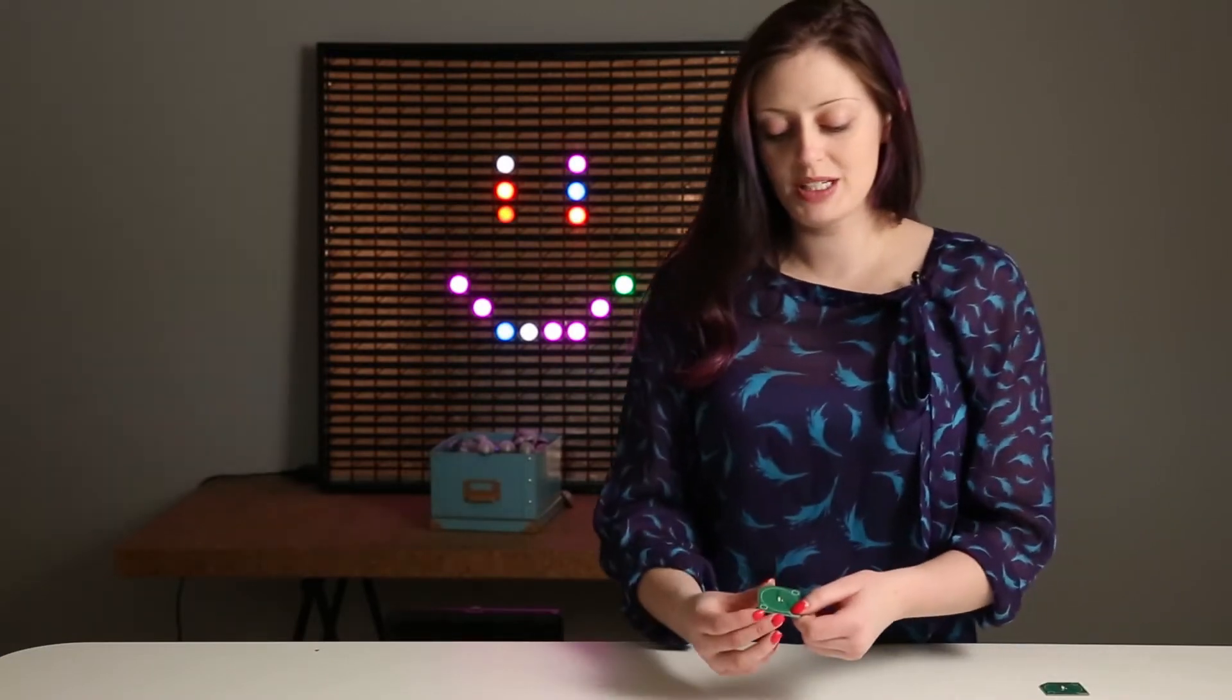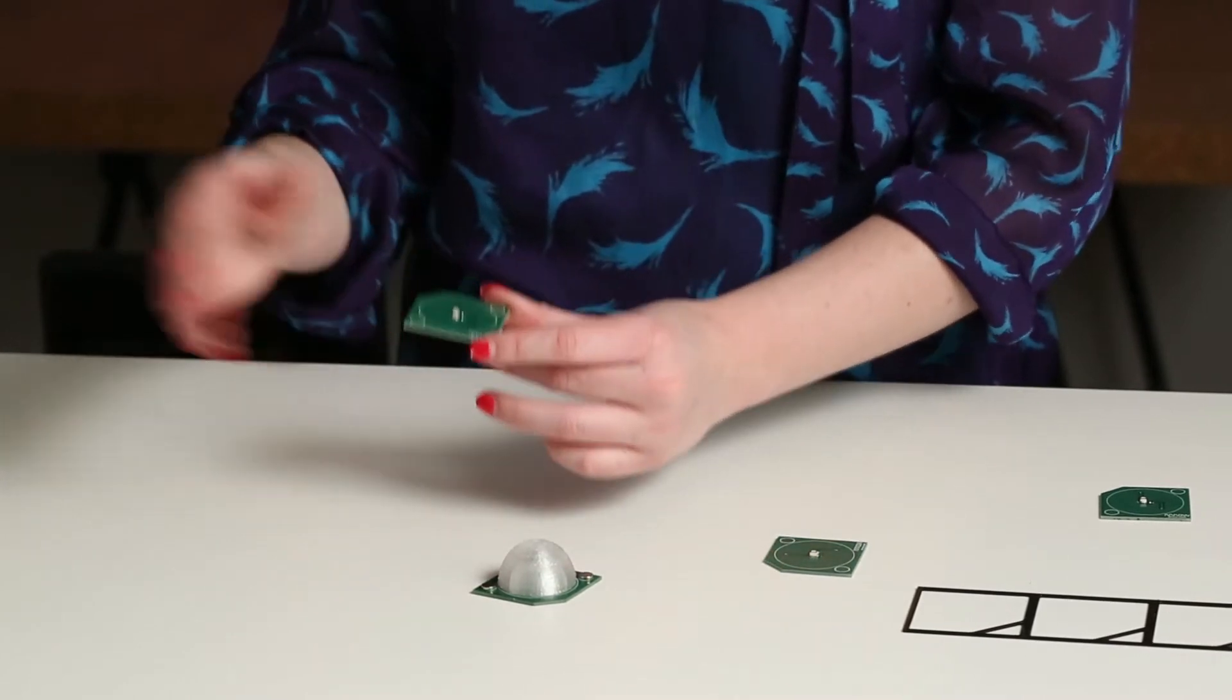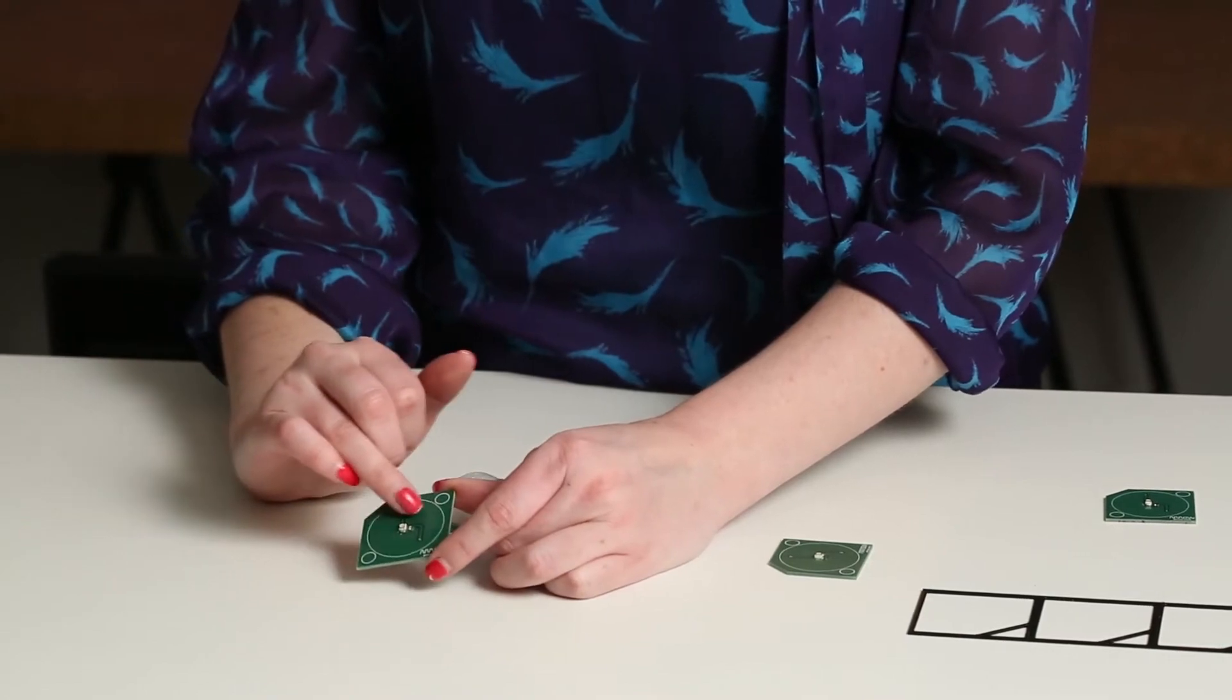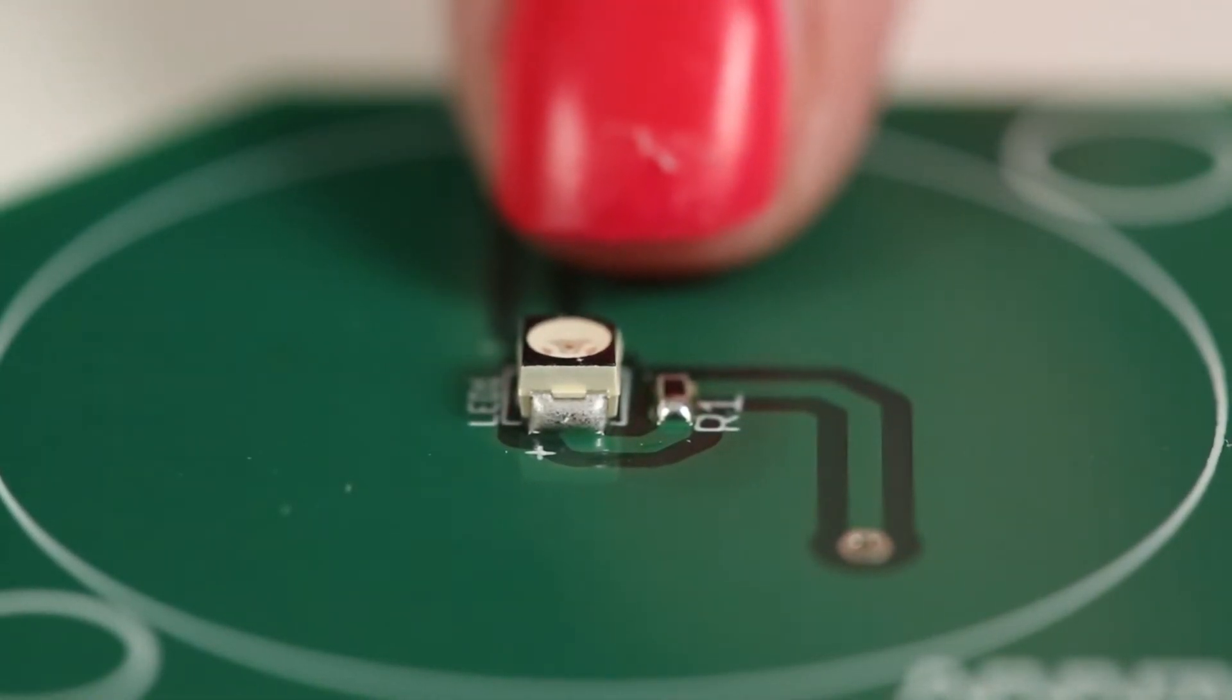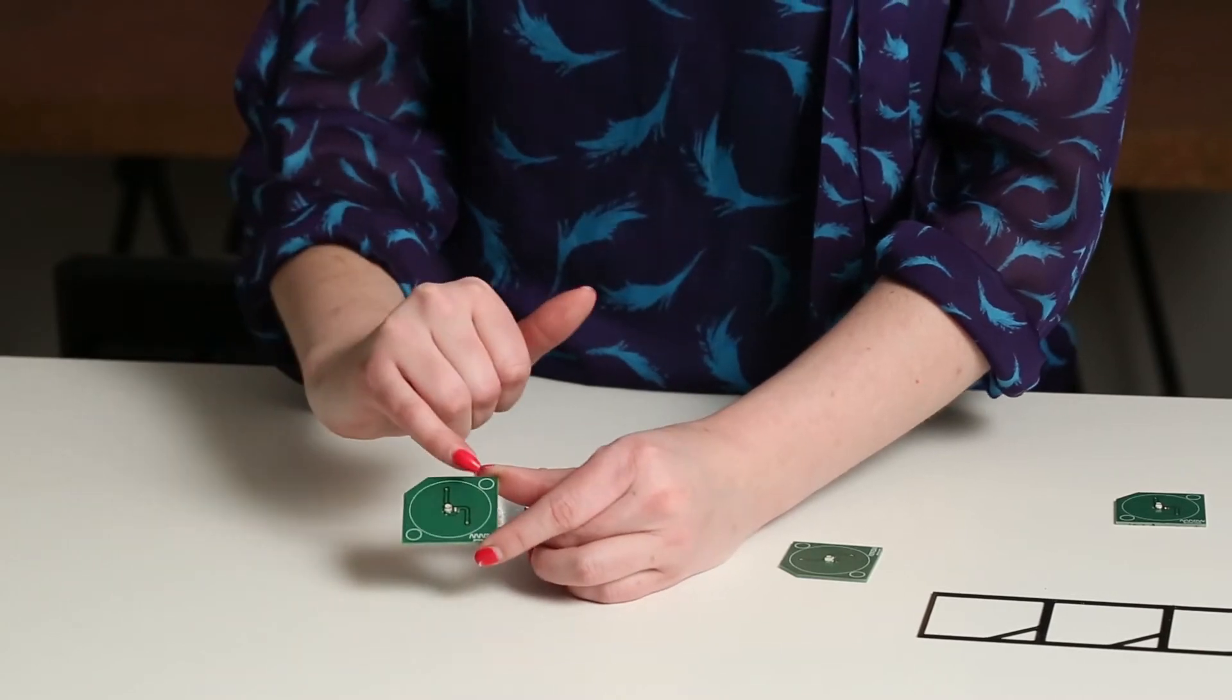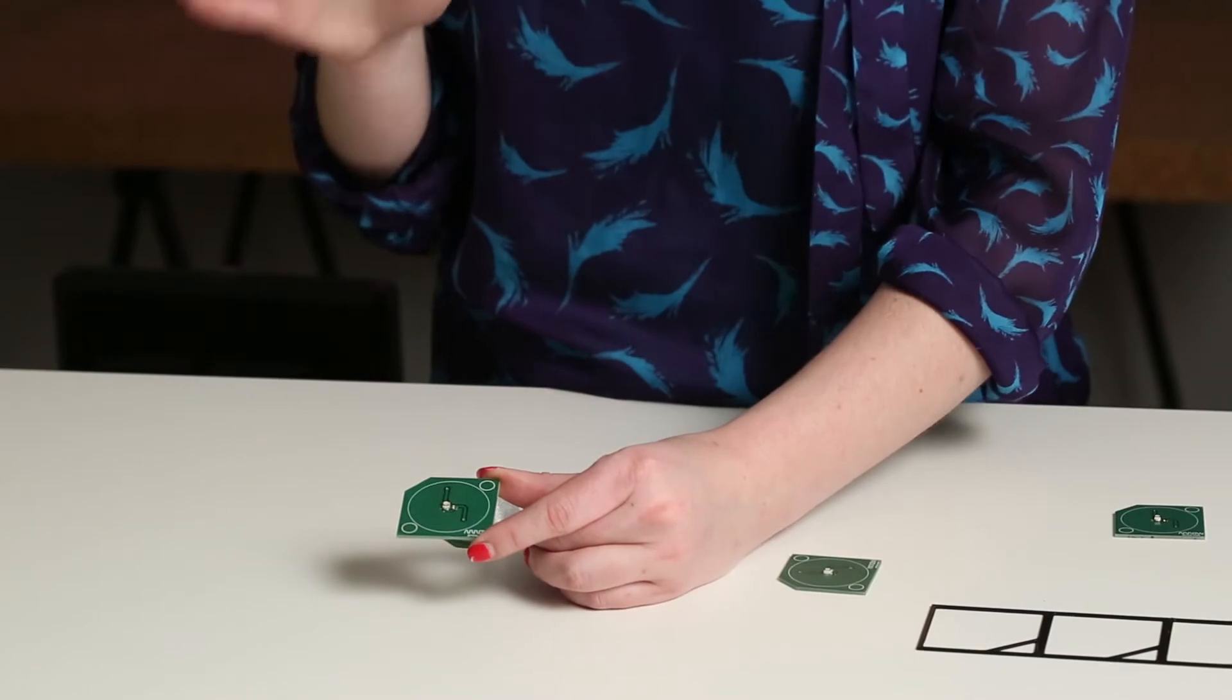These are just little PCBs that we had spun up. They're about 1.6 by 1.6 to fill out a 2 by 2 grid. You can see that I've soldered down the surface mount LED and resistor using the same technique we covered in one of the earlier videos. And all of the resistors are matched to the LEDs to make sure that at 5 volts the LEDs are only seeing 20 milliamps.